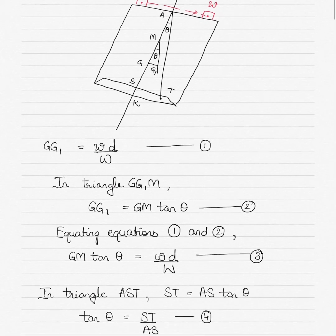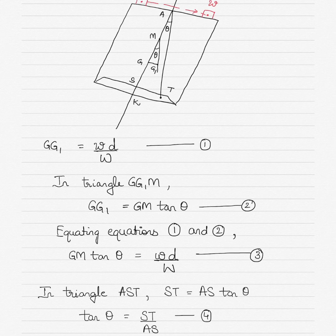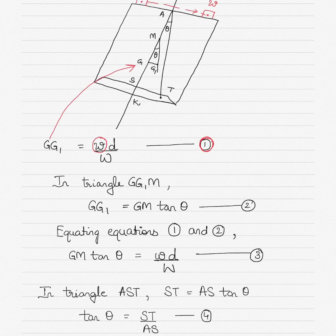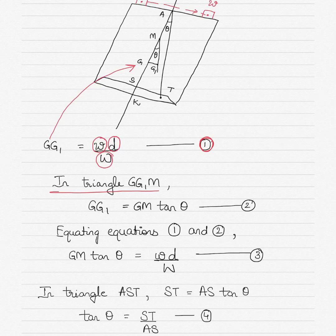The inclining experiment involves the shifting of weights and noting the deflection. To derive the formula: equation 1 gives GG1, the shift in the center of gravity, equal to w·d divided by W, where small w is the weight of the cargo that shifts, d is the distance by which it shifts, and capital W is the vessel's displacement. From the triangle GG1M, GG1 equals GM·tan(θ), which is equation 2.